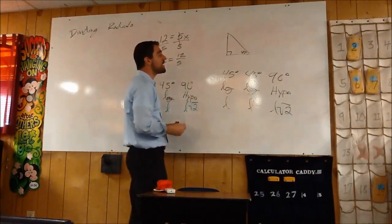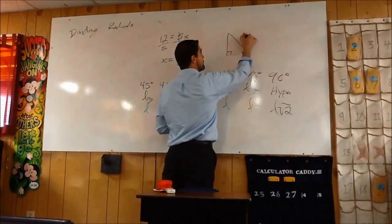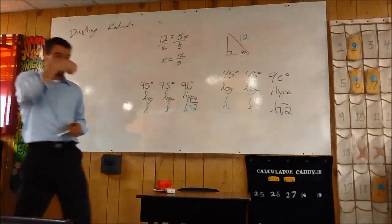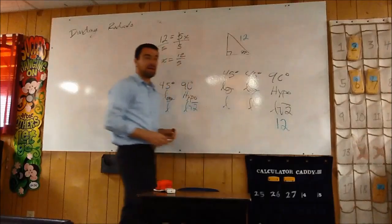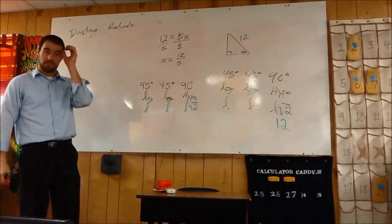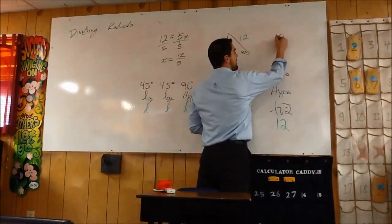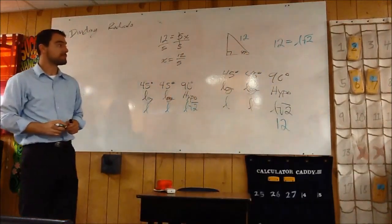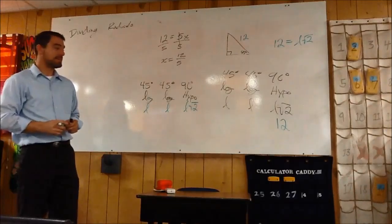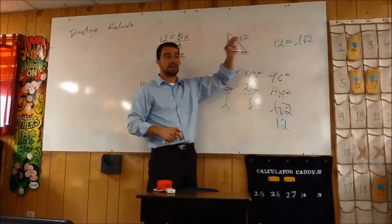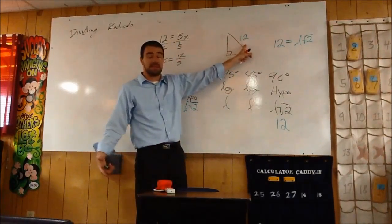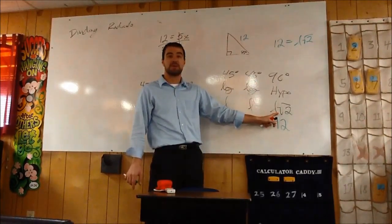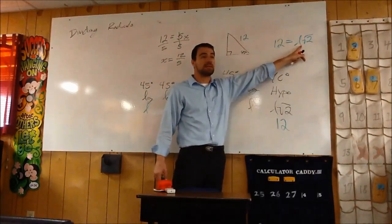Now we're going to do the same exact thing, but with a different coefficient. I could give you a 45-45-90 triangle where the hypotenuse's length is 12. If you look at the diagram and mark what you have, that's 12 units. So right now, 12 — the hypotenuse — is whatever the length of the leg is times the square root of 2. The hypotenuse in a 45-45-90 triangle is the short leg times the square root of 2, so I just wrote 12 equals L times the square root of 2.